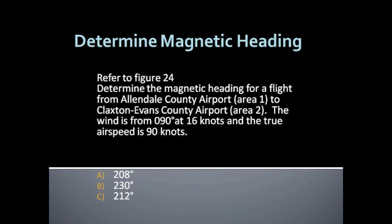This question tells us to refer to figure 24, which we'll take a look at in a minute. Determine the magnetic heading for a flight from Allendale County Airport (area 1) to Claxton Evans County Airport (area 2). The wind is from 090 degrees at 16 knots and the true airspeed is 90 knots.